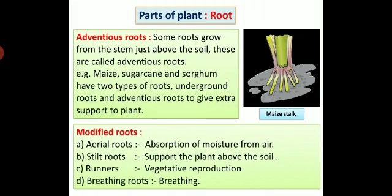Modified roots. There are some types of modified roots and they perform specific functions. First, aerial roots for absorption of moisture from air. Second, stilt roots function to support the plant above the soil. Third, runners function for vegetative reproduction. Fourth, breathing roots function for breathing.